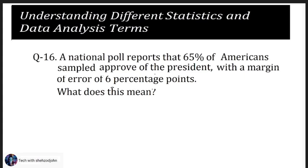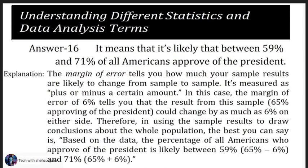Question 16: A national poll reports that 65 percent of Americans sampled approved of the president, with a margin of error of six percentage points. What does this mean? The answer is: it is likely that between 59 percent and 71 percent of all Americans approve of the president. The margin of error tells you how much your sample results are likely to change from sample to sample.